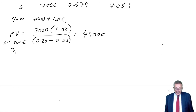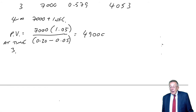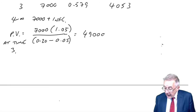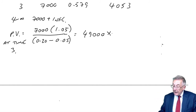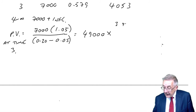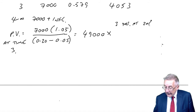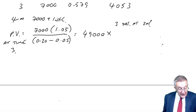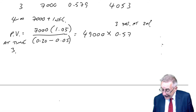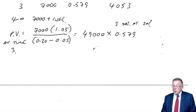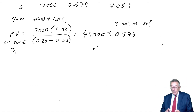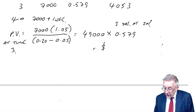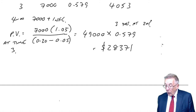Of course, I want the present value now. If it's 49,000 in three years' time, how can I get the present value now? We need to discount for three years in the normal way — three years at 20%. The discount factor for 20% over three years is 0.579. And so the present value now is 28,371.